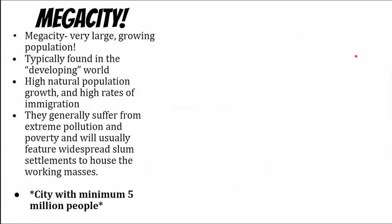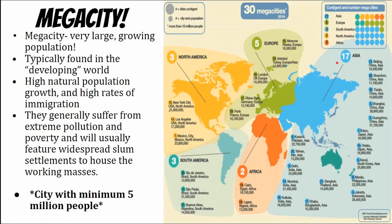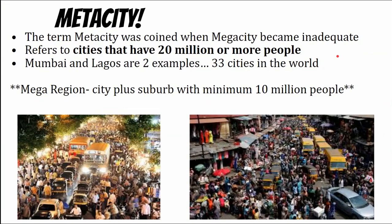A mega city is a city that's very large — it has to have 5 million people. But as the human population keeps going up, there's now a new type of classification: the meta city, which has more than 20 million people. We can see some of these in South Asia and East Asia. These are massive, massive cities.